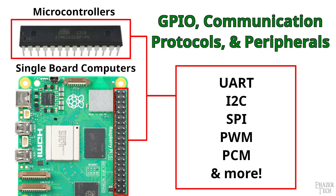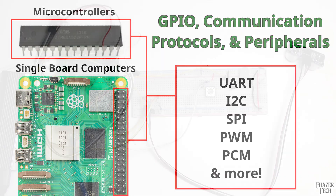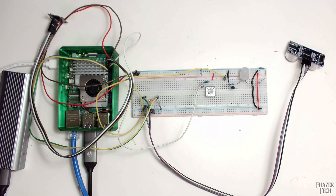Today we'll be returning to the Raspberry Pi and going over more details on its GPIO header. This video will be a general overview of the various peripherals and communication protocols that are available not only on the Raspberry Pi, but other SBCs and microcontrollers as well. In my next video I'll be doing several hands-on examples implementing some of the protocols I talk about today.